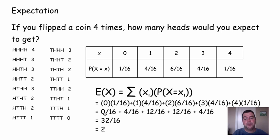And if I add all of that up, I get 32 over 16, which is 2, which is what I would expect to happen. Heads shows up about half the time, so if I'm flipping a coin 4 times, I would probably expect to see, on average, 2 heads out of every 4 flips. So that's what I'm expecting to happen, and that's the concept of expectation.